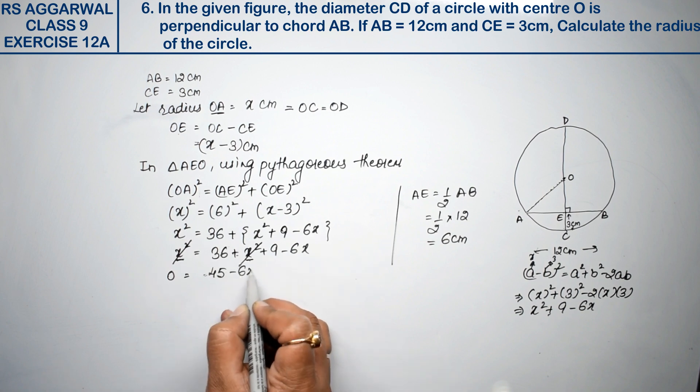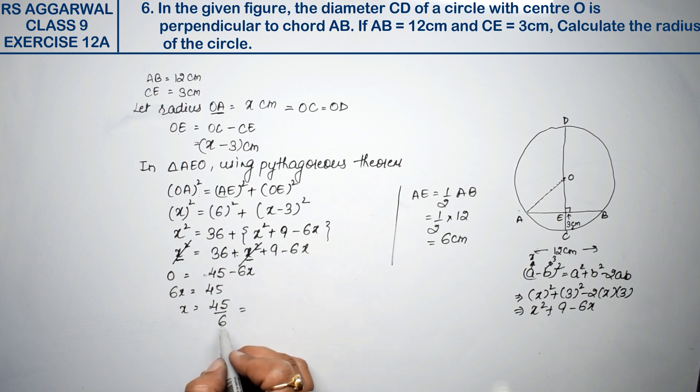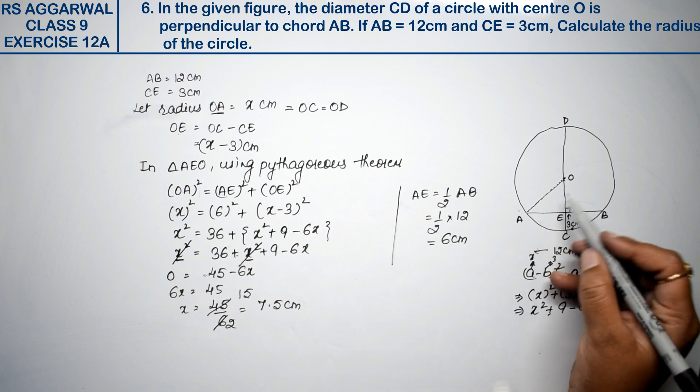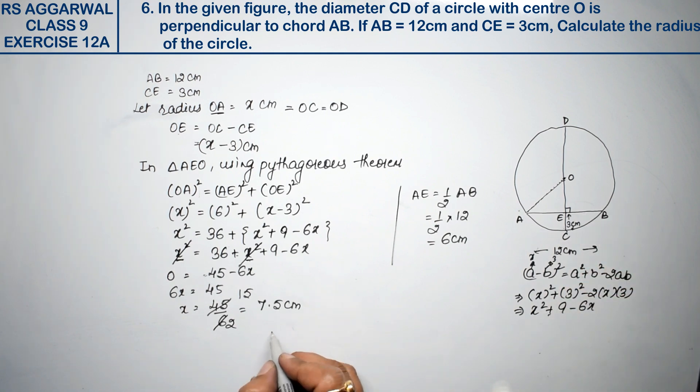Minus 6x, right? This 6x comes to this side: 6x equals to 45. x value is 45 divided by 6, that means 3 twos are 6, 3 ones are 3, 3 fives are 15: 7.5 cm. So our radius is 7.5 cm. We had to find the radius, so radius equals to 7.5 cm is the answer.